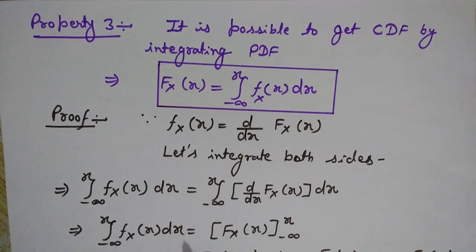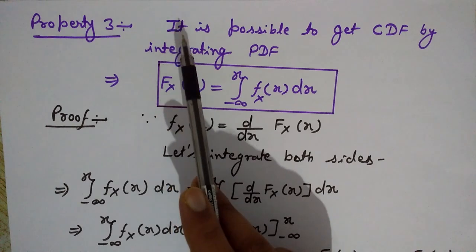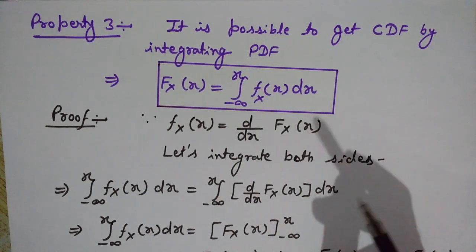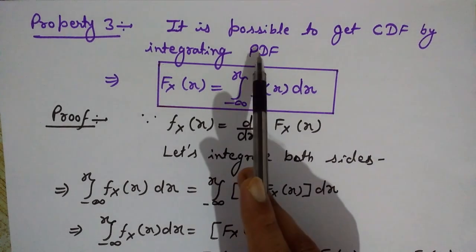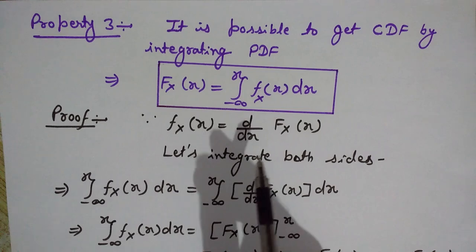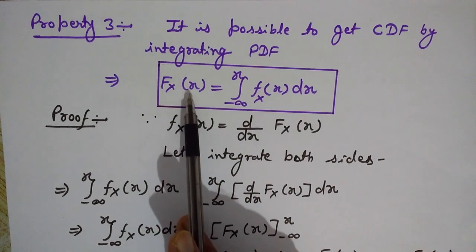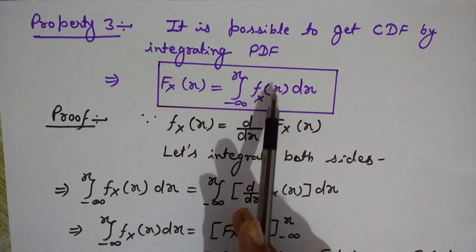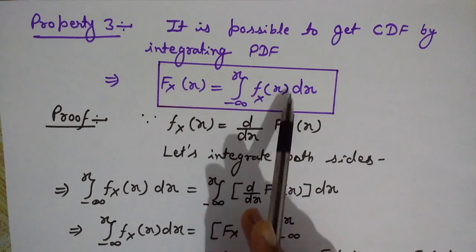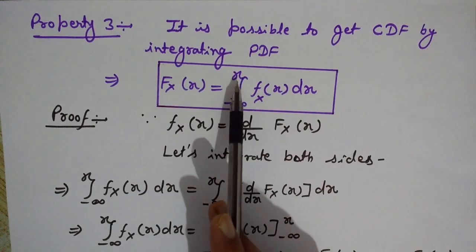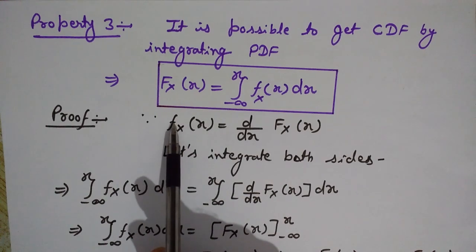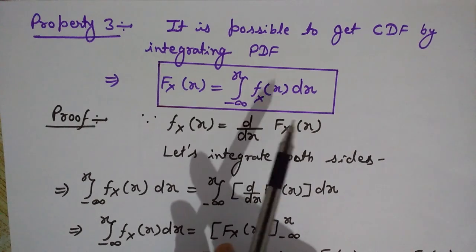Property number 3: It is possible to obtain the cumulative distribution function by integrating the PDF. Just as we get the PDF by differentiating the CDF, the reverse is also true — we can recover the CDF by integrating the PDF. Specifically, F(x) is obtained by definite integration of f from minus infinity to x.